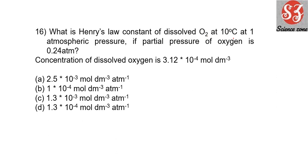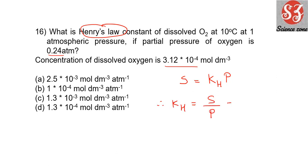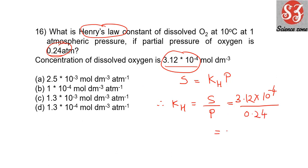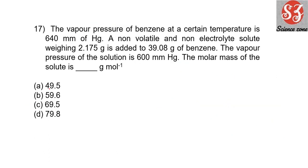Next: 'What is Henry's law constant of dissolved O₂ at 10°C at 1 atmospheric pressure, if the partial pressure of oxygen is this much and the concentration of dissolved oxygen is this much?' Henry's law states: S = KH × P, therefore KH = S / P. Solubility is 3.12 × 10⁻⁴, divided by pressure 0.24 atm. Solving gives 1.3 × 10⁻³ mol per dm³ per atmosphere. That is option C.